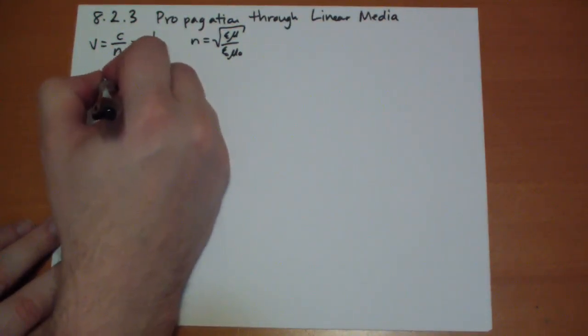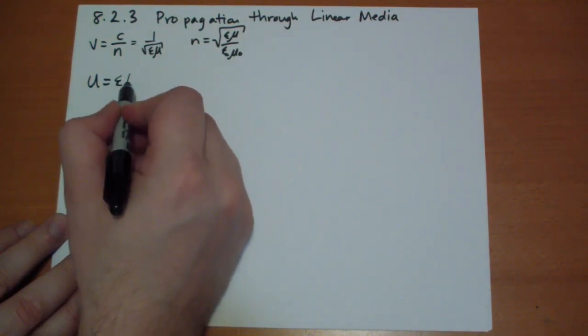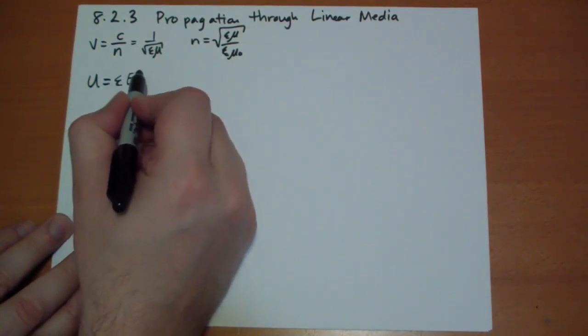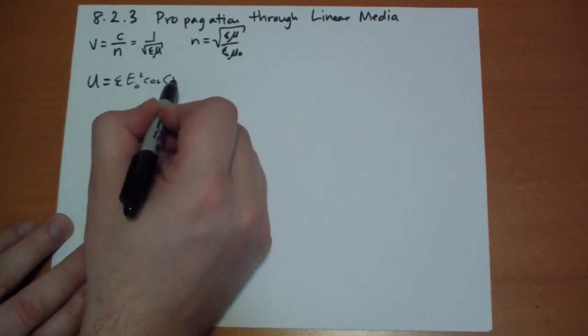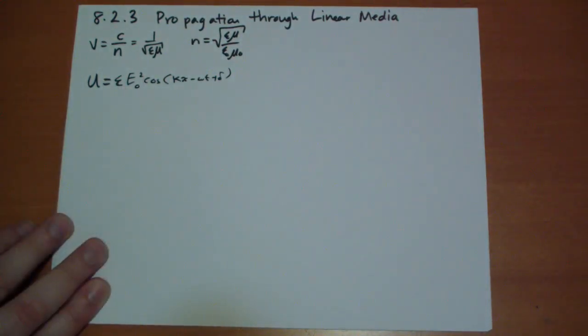We get u, the energy, is just epsilon instead of epsilon not, E not squared cosine of kappa x minus omega t plus delta.